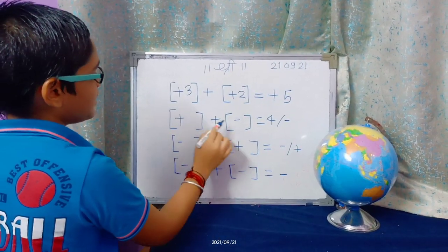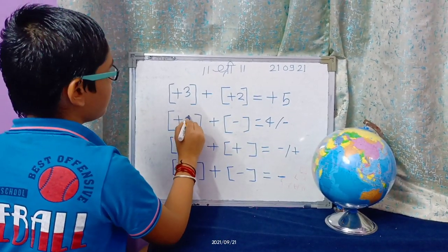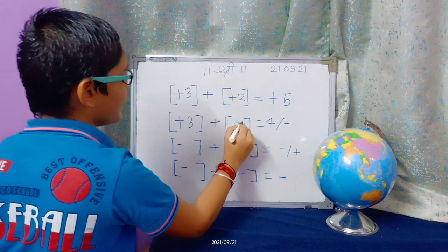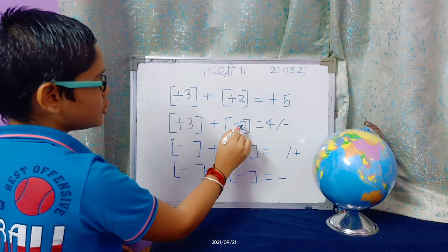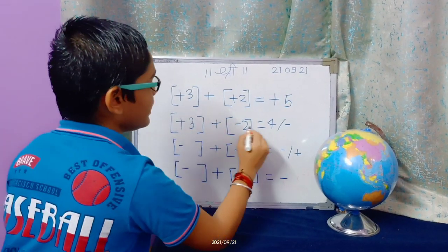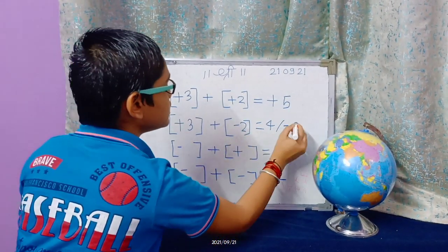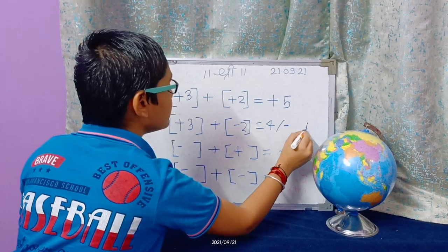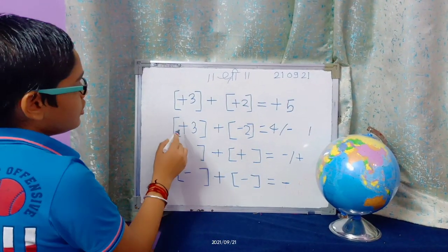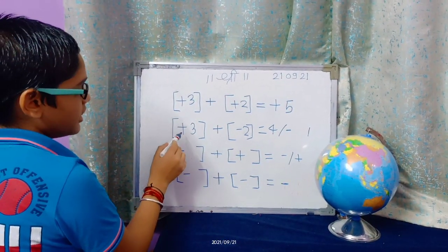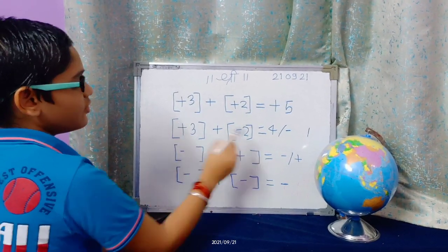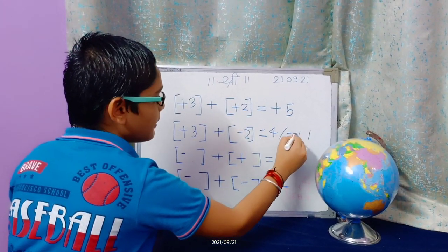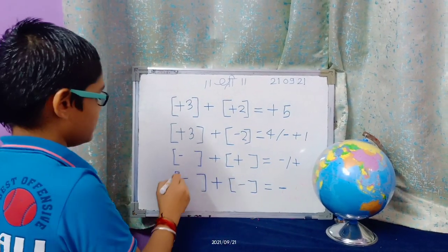Then plus plus minus. Plus 3 plus minus 2. So here we would do 3 minus 2. So 3 minus 2 is 1. The bigger sign is plus. 3 is bigger than 2, so the answer is plus 1.